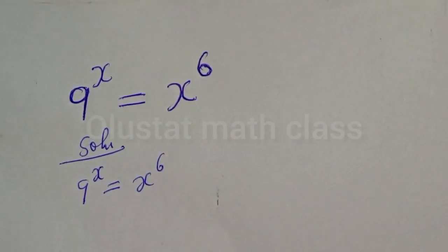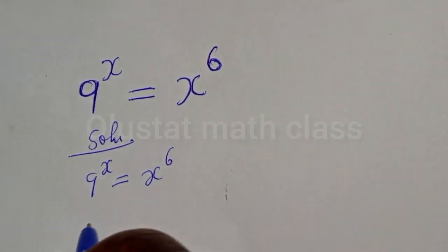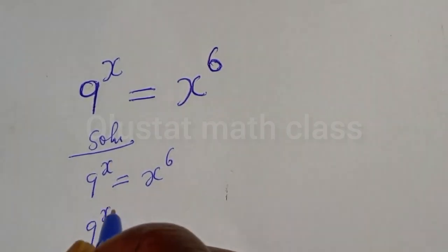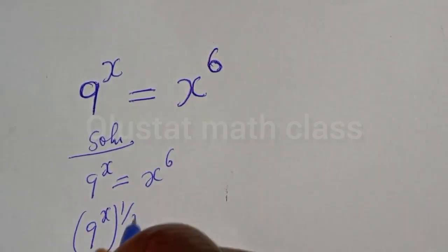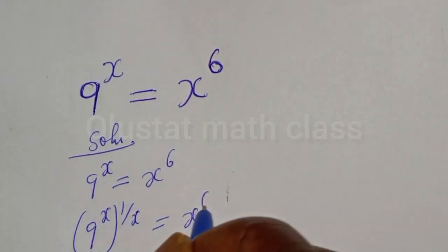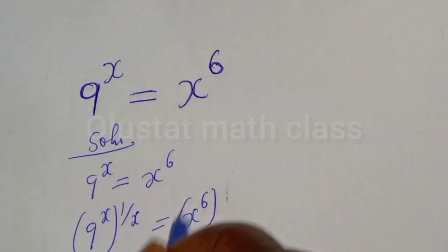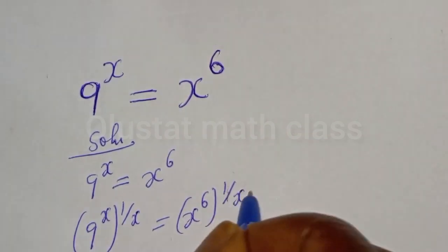Now let's multiply the exponent of both sides by 1 over s. 9 raised to power s, to the power of 1 over s, is equal to s raised to power 6, to the power of 1 over s.